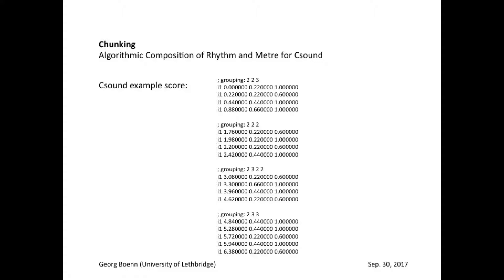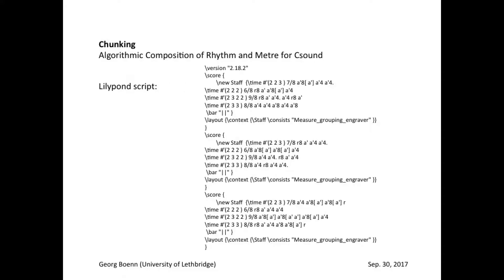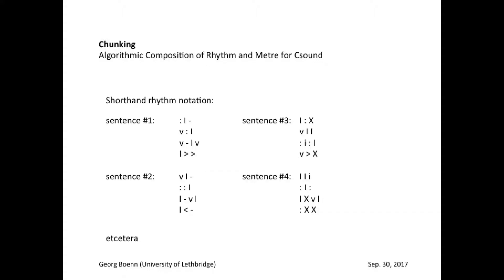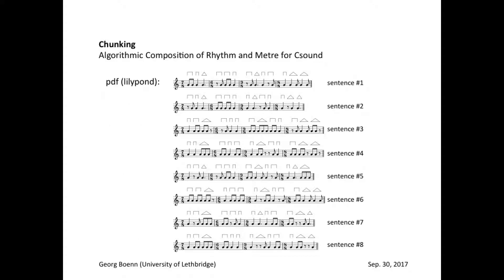This is the CSound score file. Here is the script that is needed for Lilypond. And this shows an excerpt of the text file used to save all the rhythmic patterns that have been generated so far. Finally, the PDF file generated by Lilypond after inputting that script. Note the number of sentences and the variations between them — this is all being generated automatically by the same algorithm.